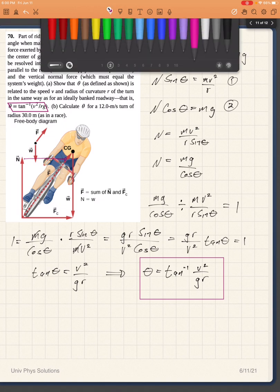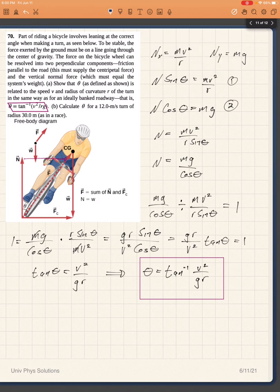Then for part B, we just need to find a specific example for a turn of radius 30 and the speed of 12 meters per second.